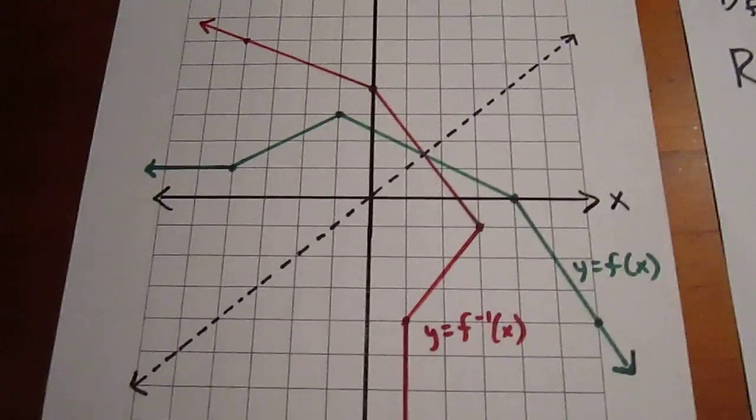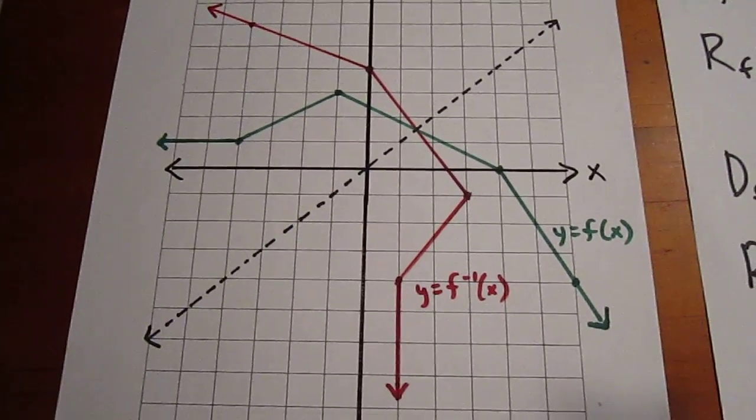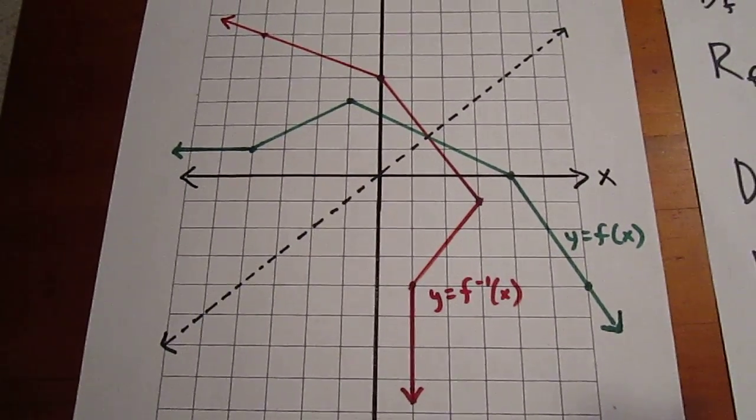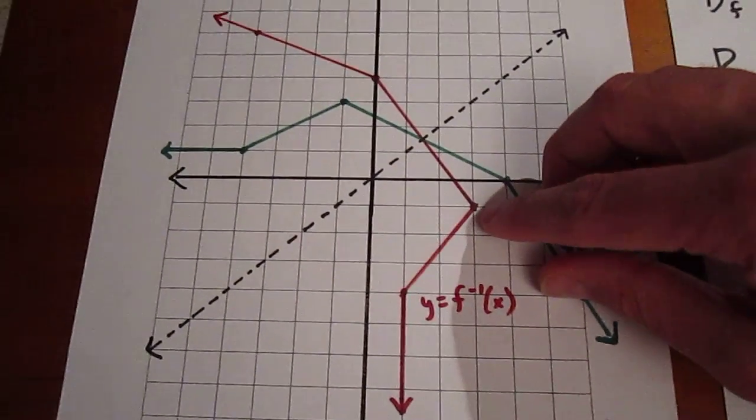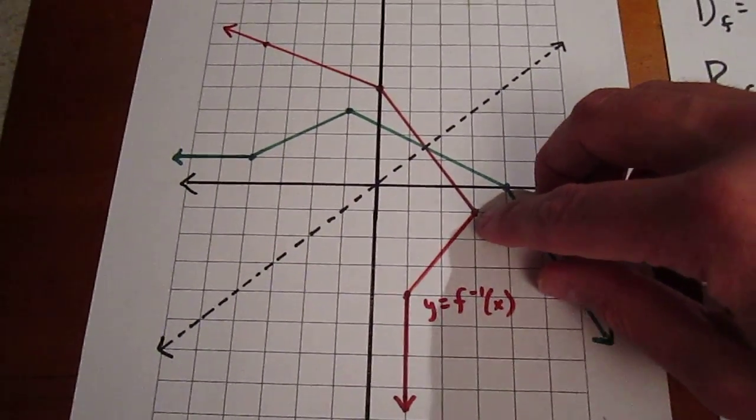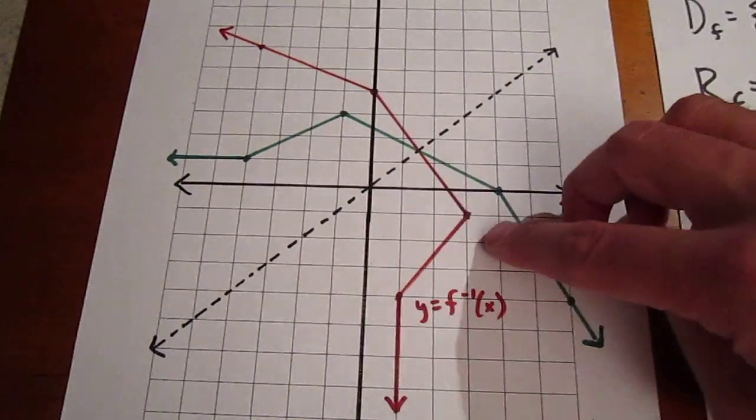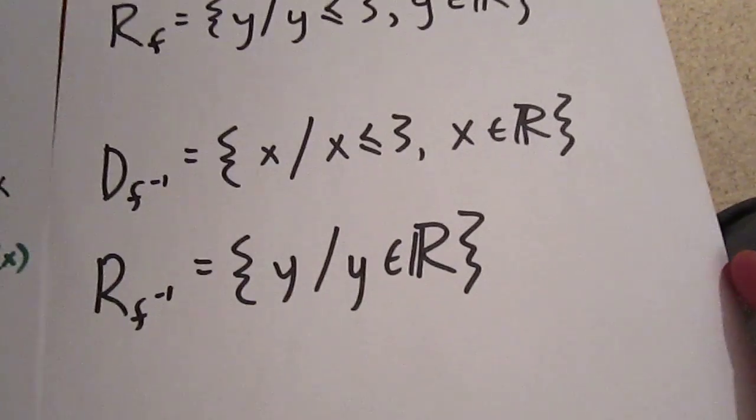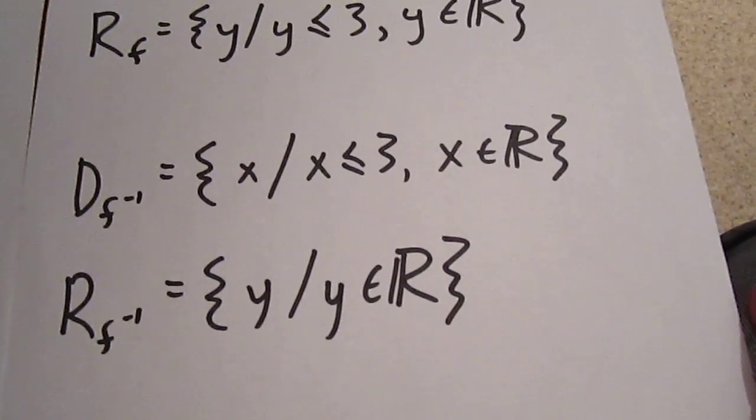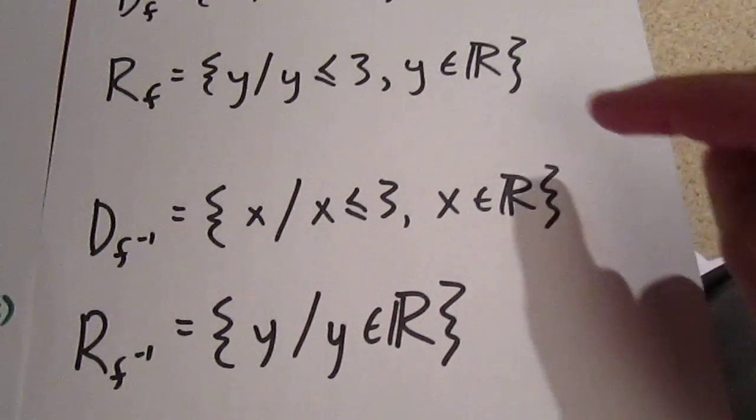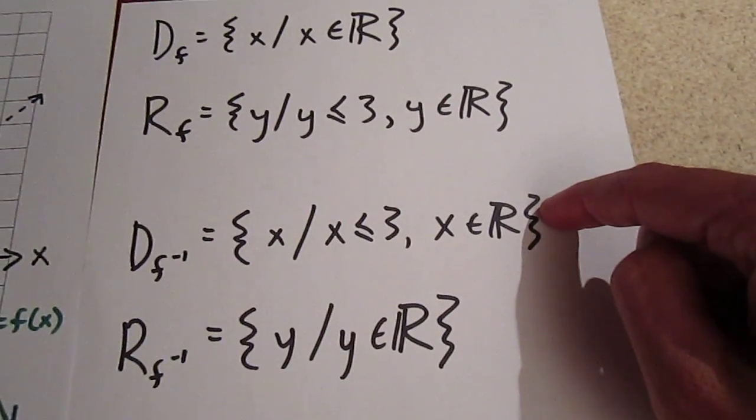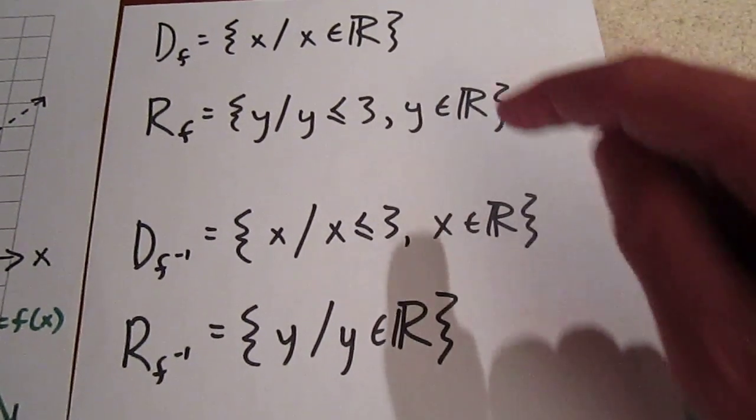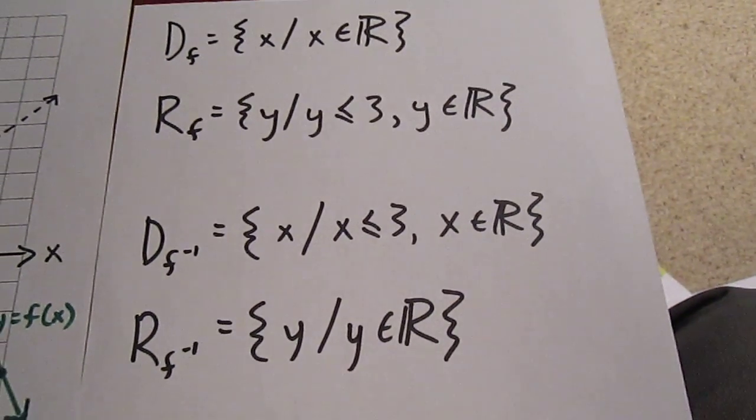With respect to the red curve, the inverse, we see that the range is all y element of the reals, and the domain is all x values less than or equal to 3. And what's interesting about that is that the range of the original function corresponds precisely with the domain of the inverse. The domain of the original function corresponds precisely with the range of the inverse.